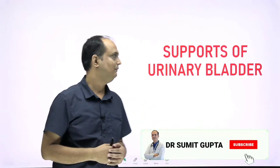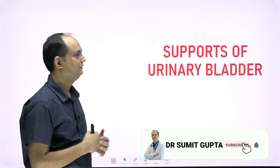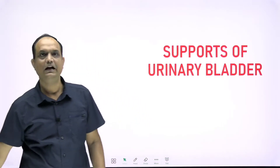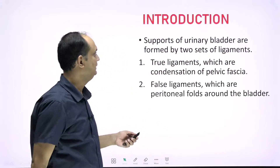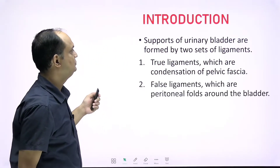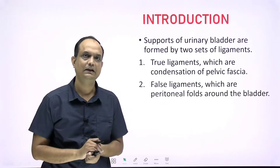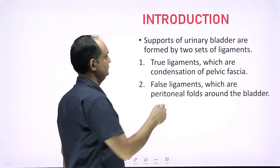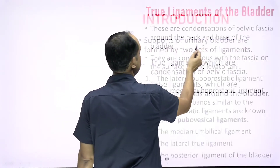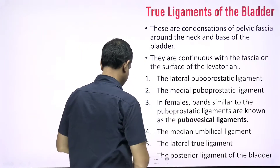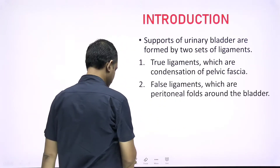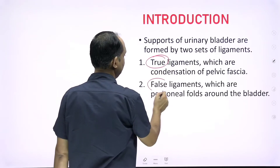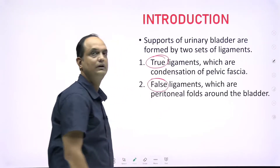Hello students. Today we will discuss the supports of the urinary bladder. When studying the supports of the urinary bladder, you should always keep in mind that there are two sets of supports. These two sets are known as the primary support, or the true support, and the false supports of the urinary bladder.